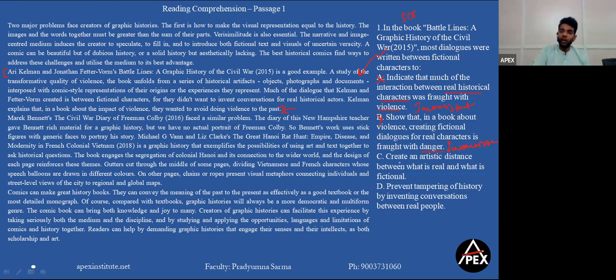What about here? 'Create an artistic distance between what is real and what is fictional.' Now this seems all right, but this becomes a partial scope choice because this artistic distance between what is real and what's fictional has not been established. They've only told that they didn't want to invent a new conversation because that would demean the history over there, correct? Which we can very clearly see from option D. So our answer should be option D. Are we clear?